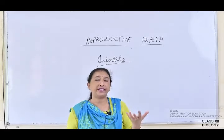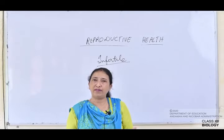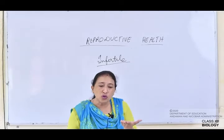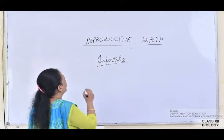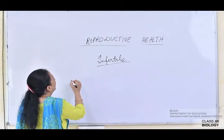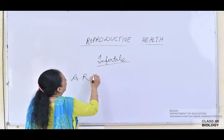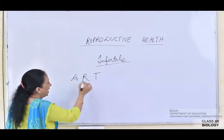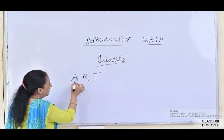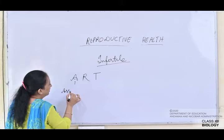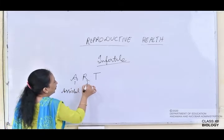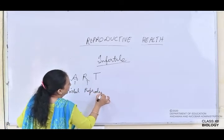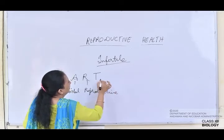Earlier this was a taboo, but now there are various scientific techniques by which the couple will be able to have a child of their own. Those technologies are known as ART — Assisted Reproductive Technology.